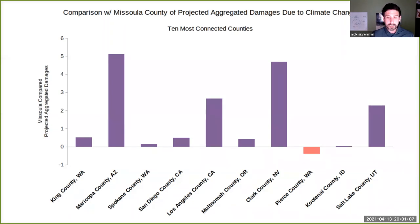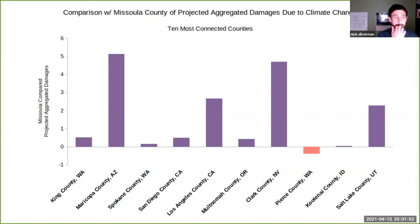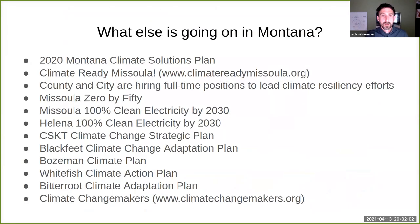The tribes have really led the way on climate adaptation plans — CSKT has a fantastic one, Blackfeet have one. Bozeman just came out with one, Whitefish has one. I've also been helping the Bitterroot — a very small group with little resources in a very conservative part of the state — and they have actually started their adaptation plan with a group called the Bitterroot Climate Action Group. It's happening in areas of the state you wouldn't expect. A group called Climate Change Makers, started by a friend of mine, is focused on political action — getting climate-committed leaders elected and holding them accountable.